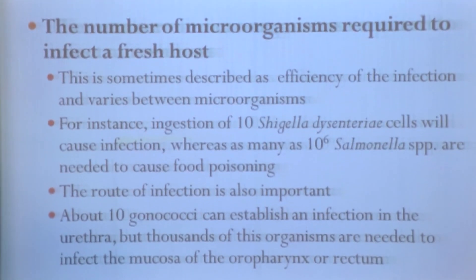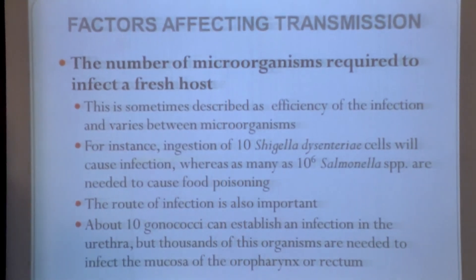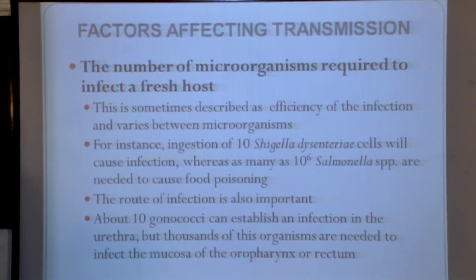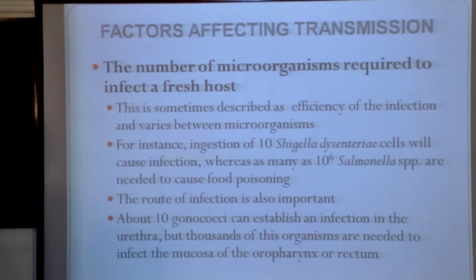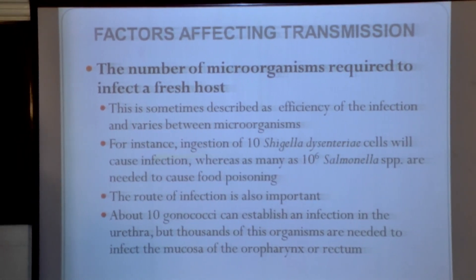Coming to the third point — the number of microorganisms required to cause infection in a susceptible host, sometimes described as the efficiency of infection. This will vary between microorganisms. For instance, if you consider Shigella dysentery, just 10 cells are enough to cause infection. But if you consider Salmonella, 10 to the power of 6 cells are required to cause infection.